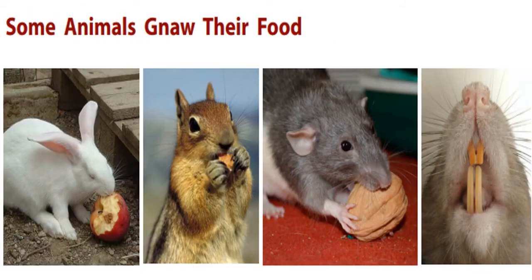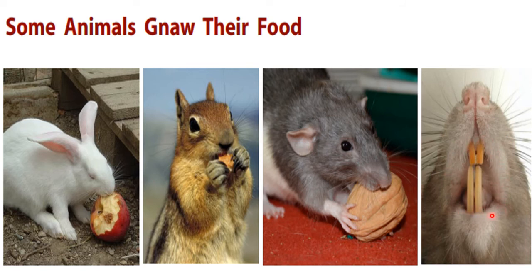Now let us see about animals that gnaw their food. Children, you have to pronounce this G-N-A-W-S — gnaws. Gnawing means to bite something repeatedly. See this picture — rabbit, squirrel, and rat. These animals have sharp front chisel-like teeth, which help them to bite even hard and rough food grains and other food items. Such animals are called gnawing animals.